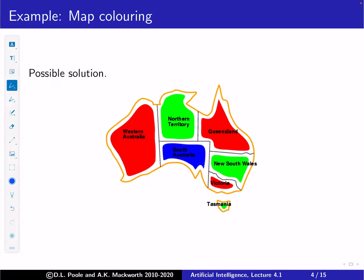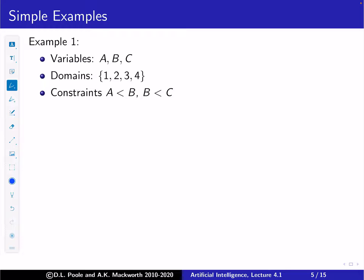Here's a possible solution: Western Australia, Queensland, and Victoria are red; South Australia is blue; Northern Territory and New South Wales are green; and Tasmania can be any color — we colored it green. That's one valid solution.